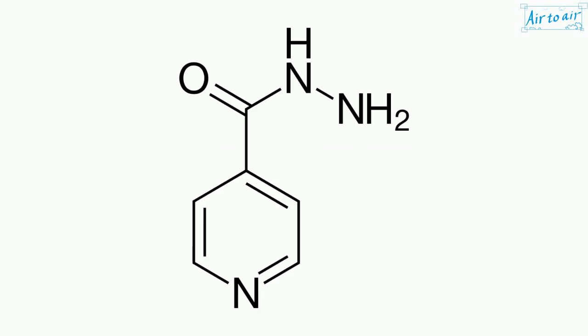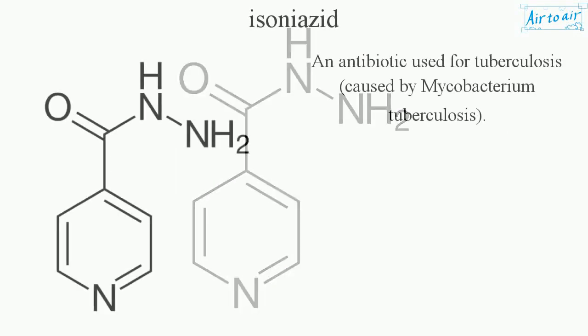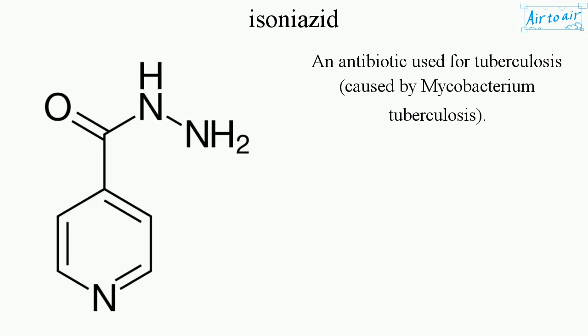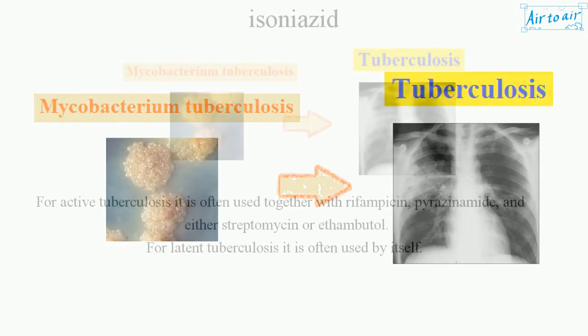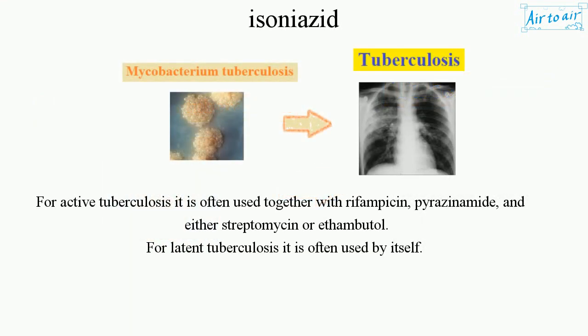Isoniazid is an antibiotic used for tuberculosis caused by Mycobacterium tuberculosis. For active tuberculosis it is often used together with rifampicin, pyrazinamide, and either streptomycin or ethambutol. For latent tuberculosis it is often used by itself.